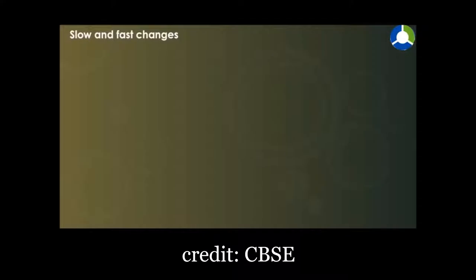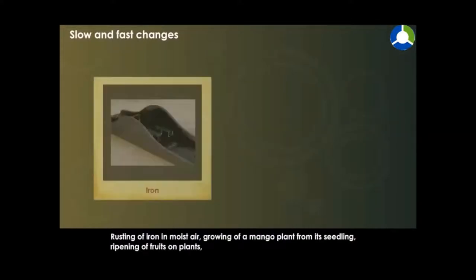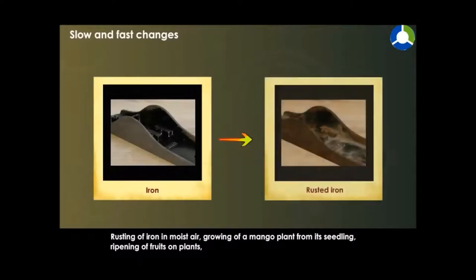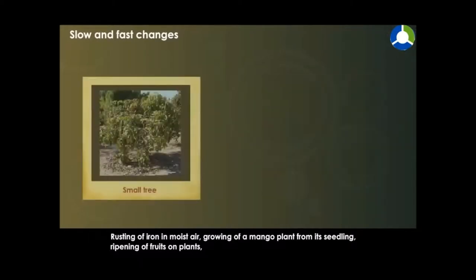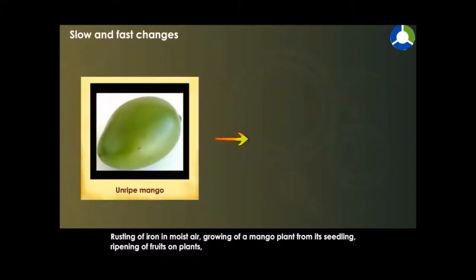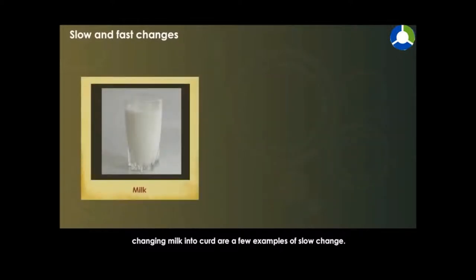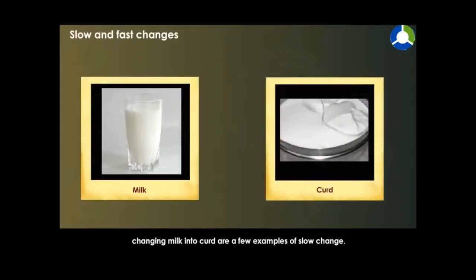Slow and fast changes. Some changes occur very slowly. These slow changes may take hours, days, months or even years. Rusting of iron in moist air, growing of a mango plant from its seedling, ripening of fruits on plants, changing milk into curd are a few examples of slow change.